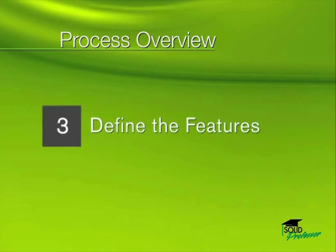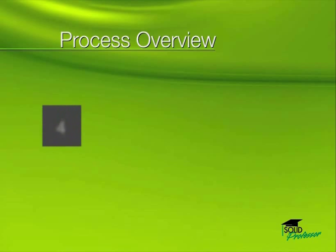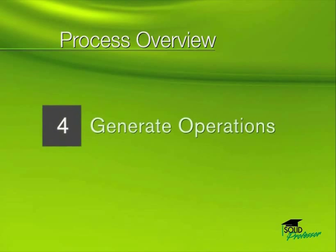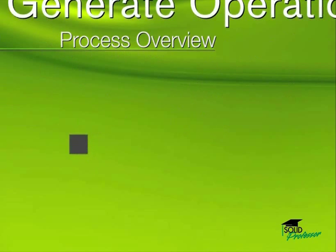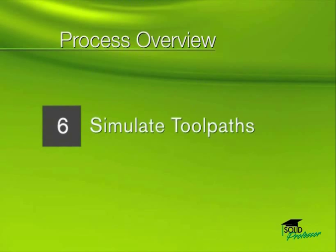Next, you'll determine what features on the part will be machined, followed by an operation plan that creates machining operations for each feature. You can make any necessary adjustments to your operations, or you can go ahead and generate toolpaths, run a simulation, and then take advantage of CamWorks' flexibility in making adjustments to operations and toolpaths as you see fit.